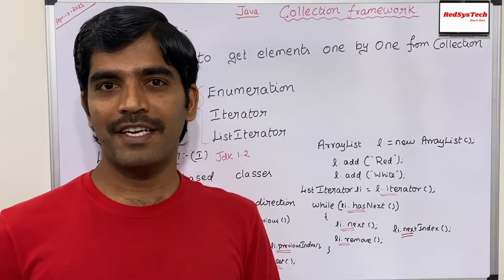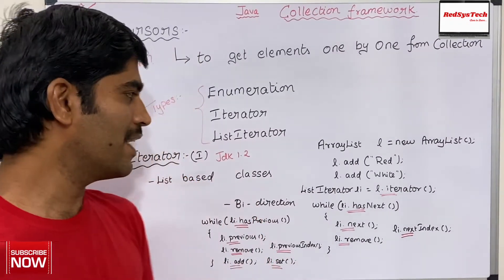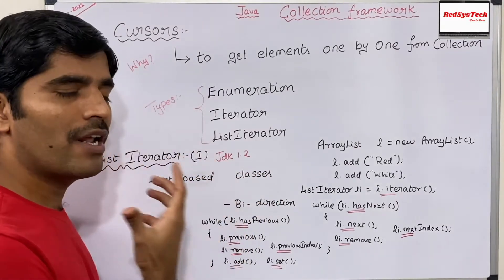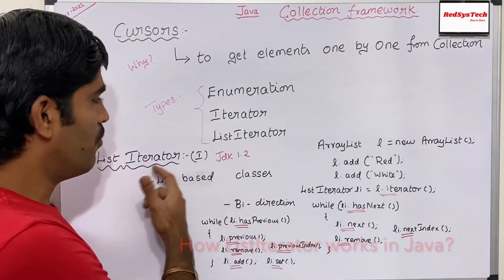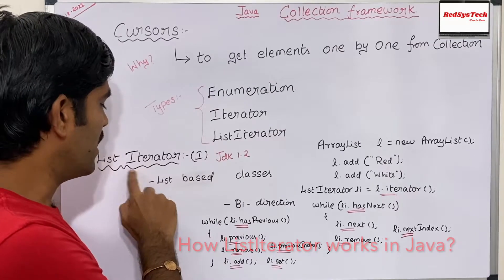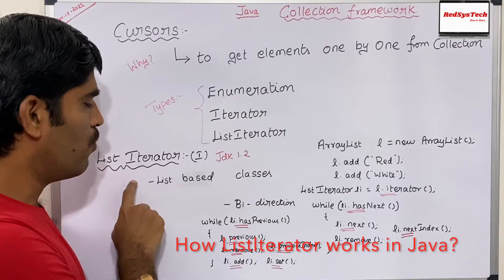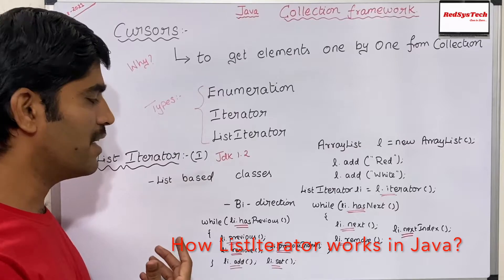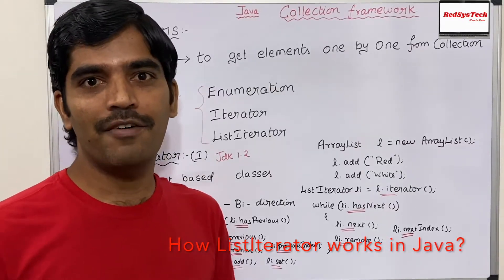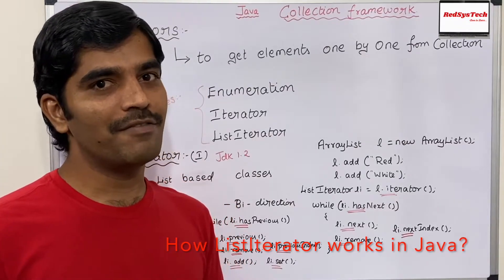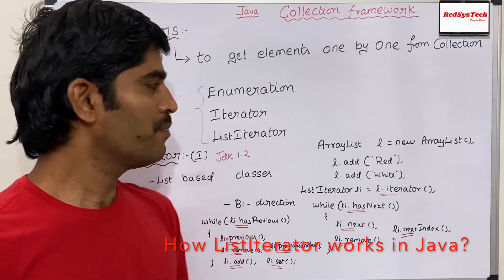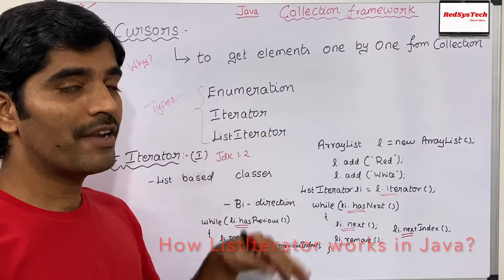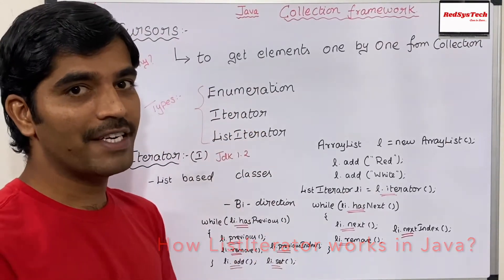ListIterator is an interface in Java. Basically, it was introduced since JDK 1.2. The Oracle team introduced JDK 1.2 with this additional interface. Why did they introduce this additional interface? The reason is there is some limitation in the previous implementation, which is the iterator. Iterator is one of the cursor concepts where we can navigate inside the collection.